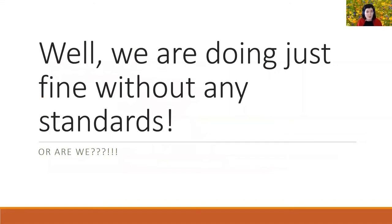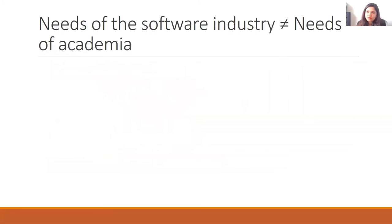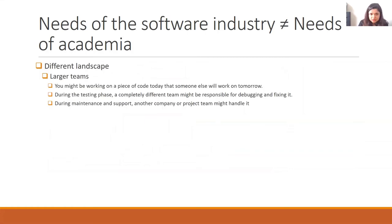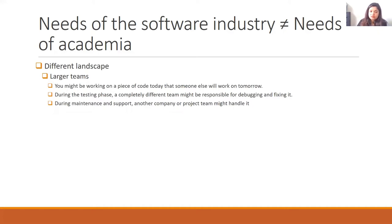Scientists often say, well, they're doing fine without any standards. But are we really? Is your code really that reliable? And the counterpoint is that the needs of the software industry are not the needs of academia. Industry works in a different landscape — there are larger teams. Science is often singular projects that PhDs and postdocs are carrying out. In industry, you might be working on a piece of code today that somebody else picks up tomorrow, with different teams handling testing and maintenance. And so all of that doesn't happen in academia.